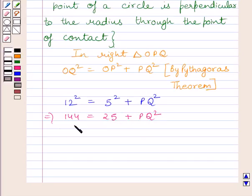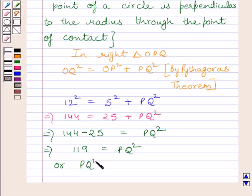Subtracting 25 from both sides of this expression, we get 144 minus 25 is equal to PQ square. Now, we know 144 minus 25 is equal to 119. So, we get 119 is equal to PQ square, or we can simply write PQ square is equal to 119.